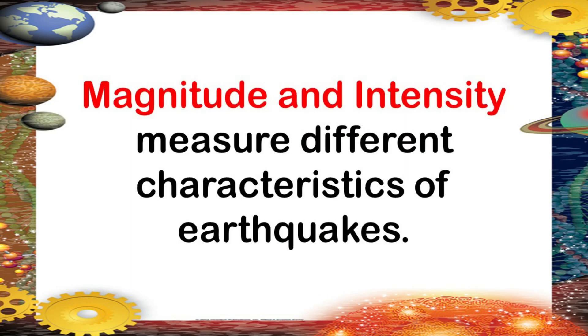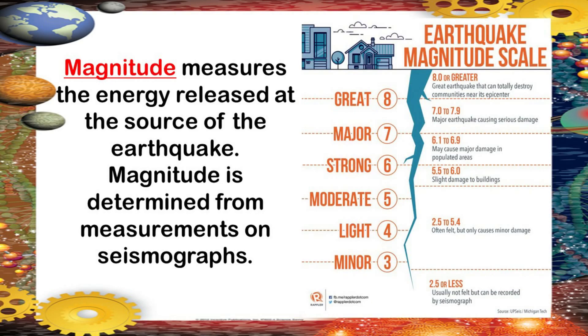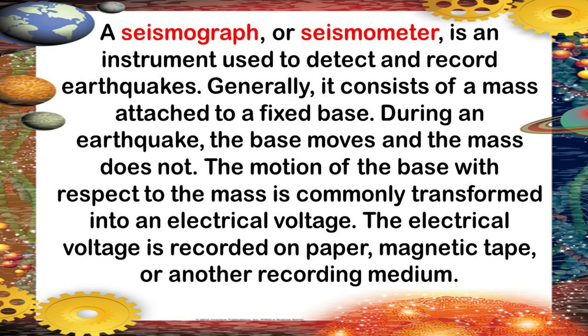Magnitude and Intensity measure different characteristics of earthquakes. Magnitude measures the energy released at the source of the earthquake and is determined from measurements on seismographs. A seismograph or seismometer is an instrument used to detect and record earthquakes. Generally, it consists of a mass attached to a fixed base. During an earthquake, the base moves and the mass does not. The motion of the base with respect to the mass is transformed into an electrical voltage, which is recorded on paper, magnetic tape, or another recording medium.